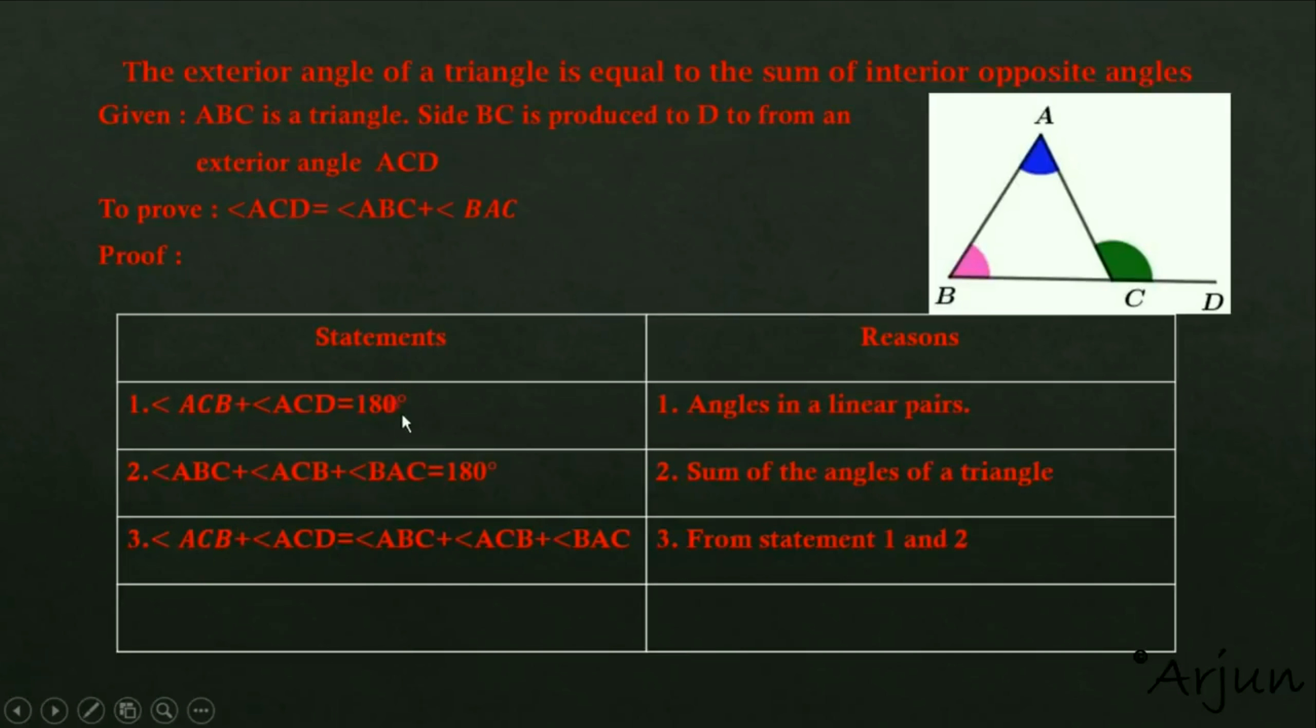So at last, we have angle ABC plus angle BAC equals angle ACD. Look here, angle ACB on both sides cancels out, and we're left with ABC plus BAC equals ACD.